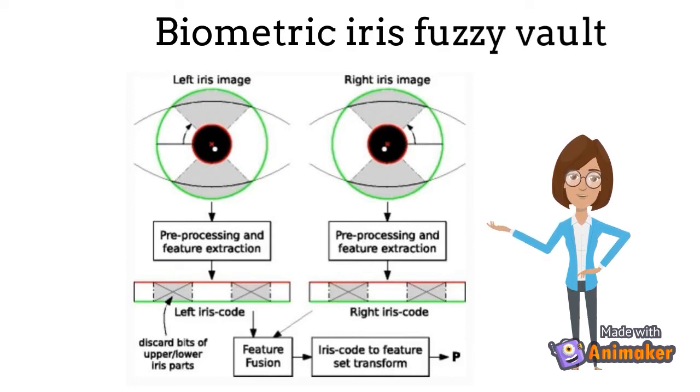At preprocessing, the pupil and the outer boundary of the iris are detected. Subsequently, general iris recognition algorithms transform the iris ring to a normalized rectangular texture on which image enhancement methods are applied.